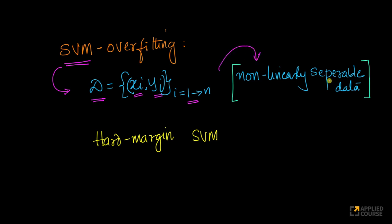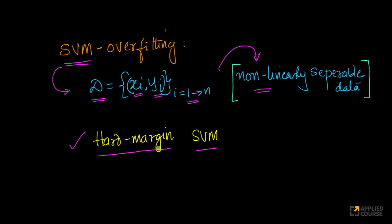The question asked of you is: imagine that you are trying to fit a hard margin SVM — not a soft margin SVM. Given a dataset like this, wherein you are trying to perform binary classification and the data is non-linearly separable, how do you overfit a hard margin SVM?